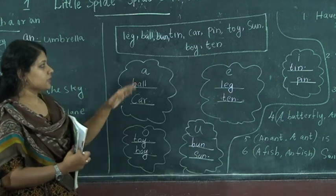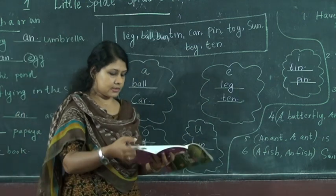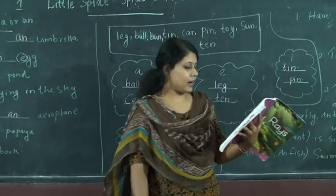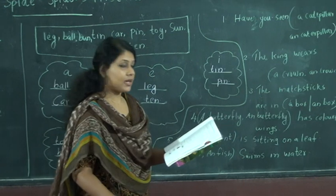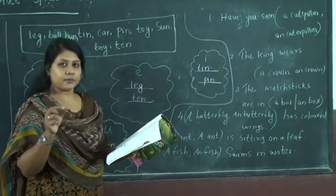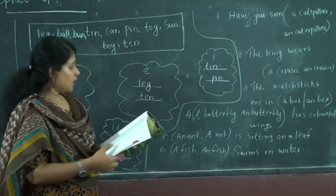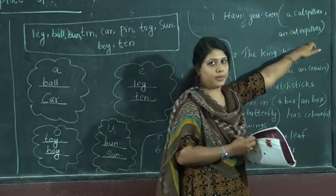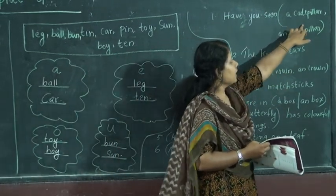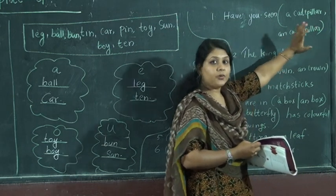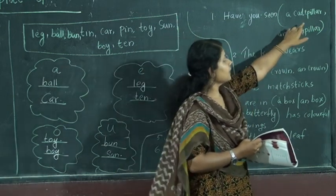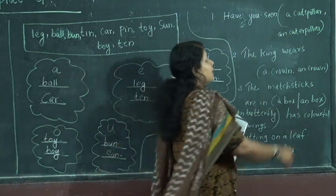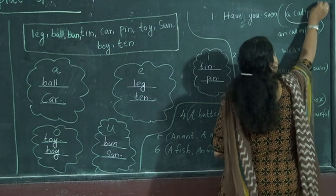All of you do this exercise. I am going to the next exercise — Exercise E: Circle the correct word in the bracket. There are six sentences. First one: Have you seen a caterpillar or an caterpillar? The first letter is C — not a vowel — so A caterpillar is the right one. Circle that word.